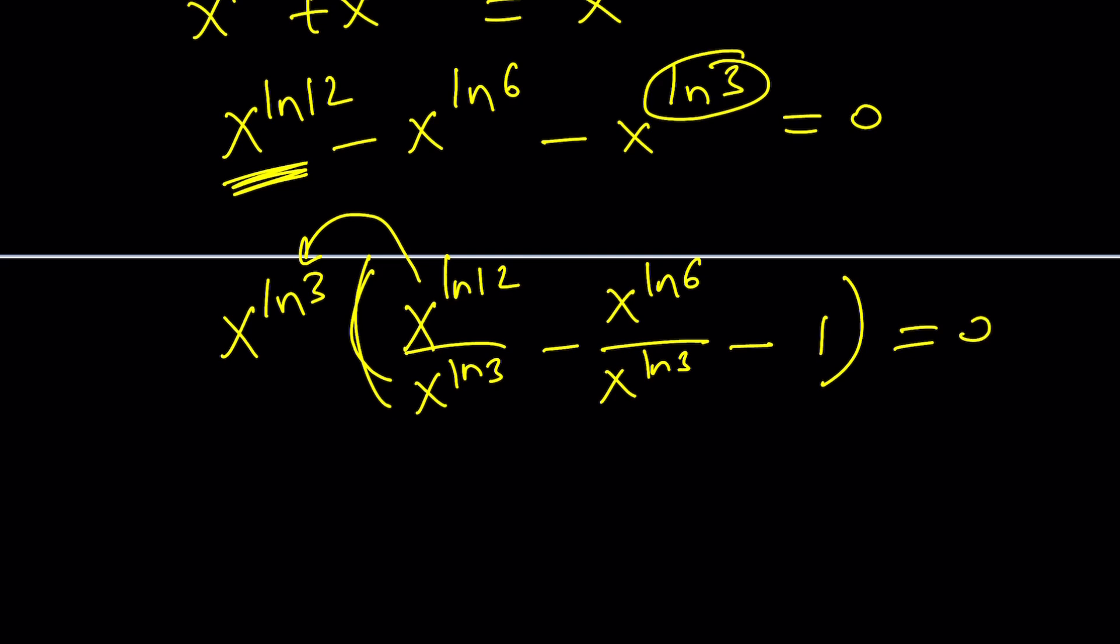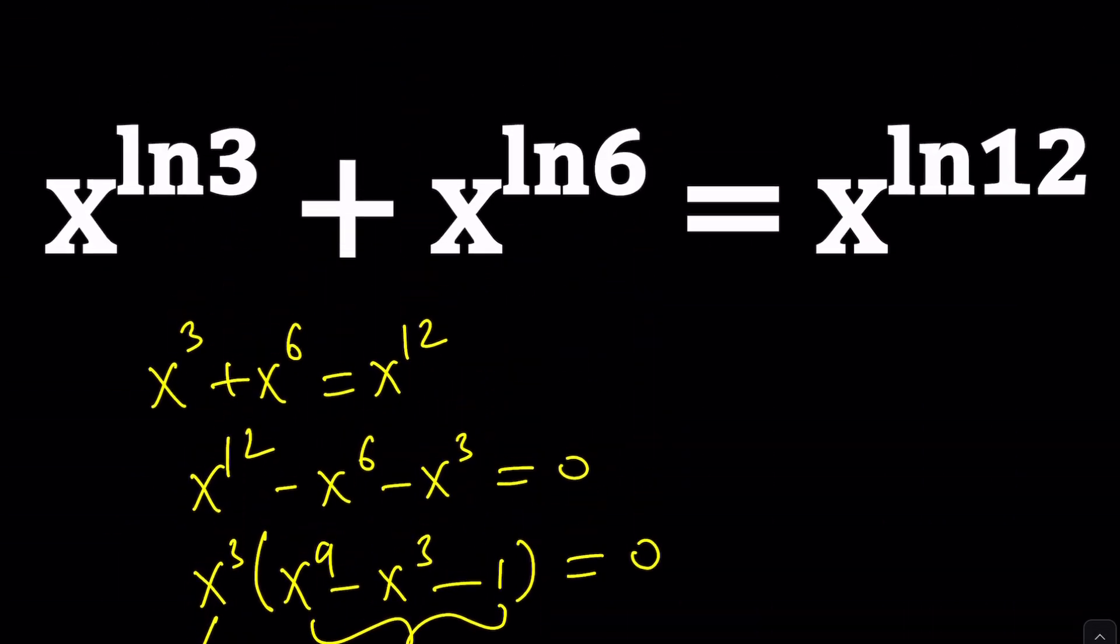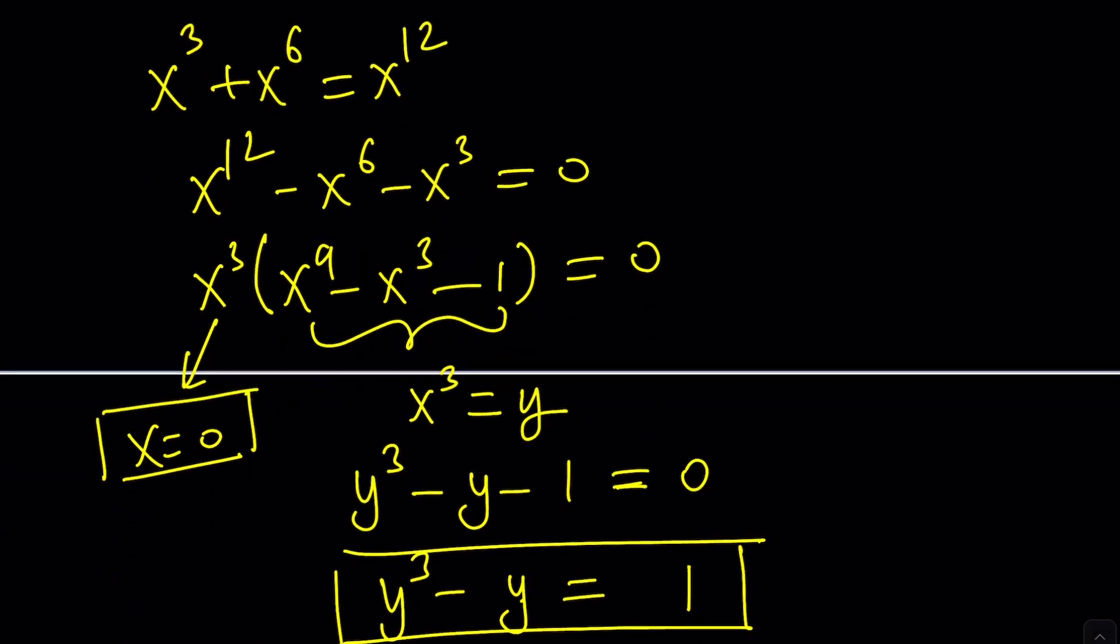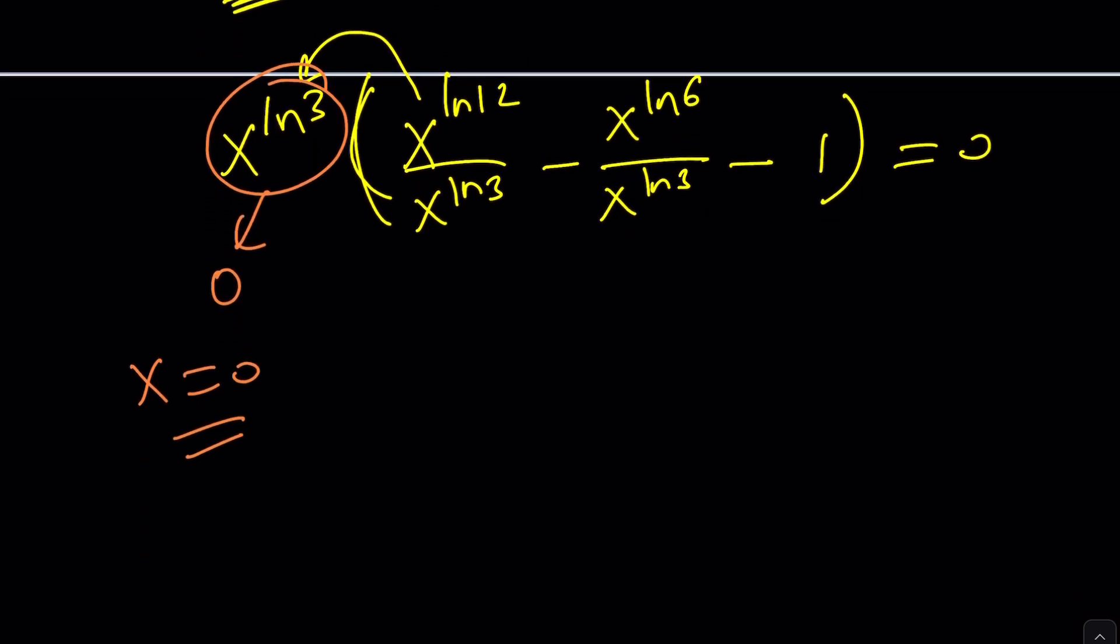Now, from here, we are definitely getting x equals 0. And if you look at the original problem, x equals 0 seems to be a solution because 0 plus 0 equals 0. That's good, but it's so trivial that it doesn't have a lot of value, even though it's one of the solutions. We are supposed to find all the solutions. How do we do that? So, let's take a look at the second factor. Is that going to help us at all?